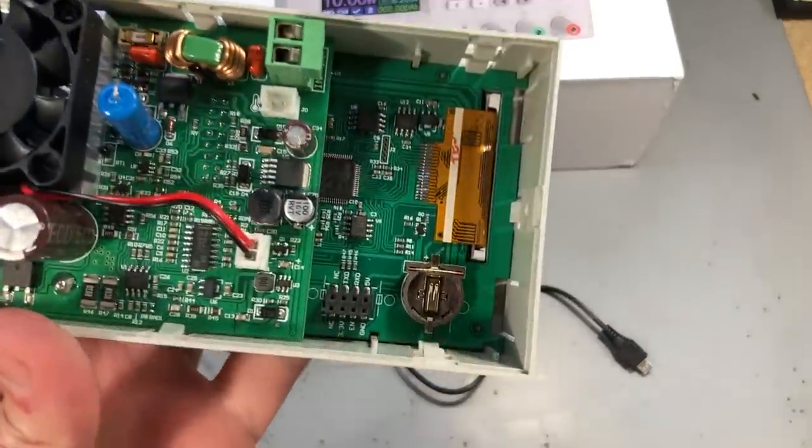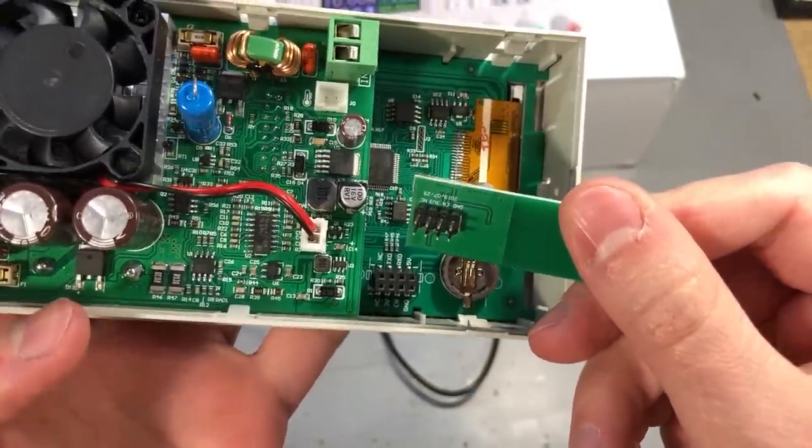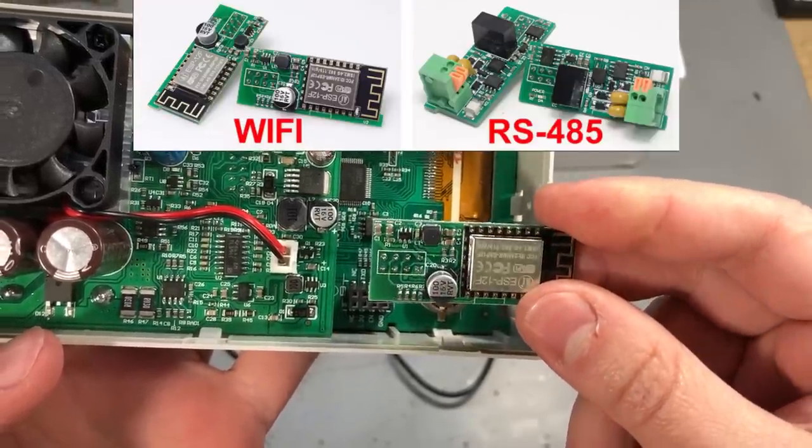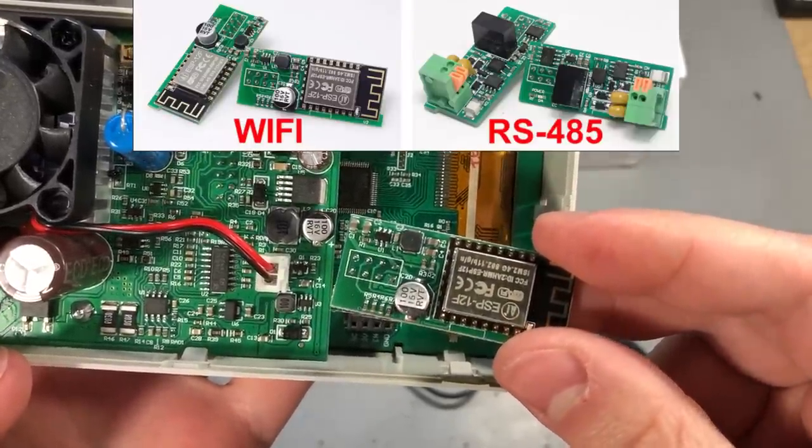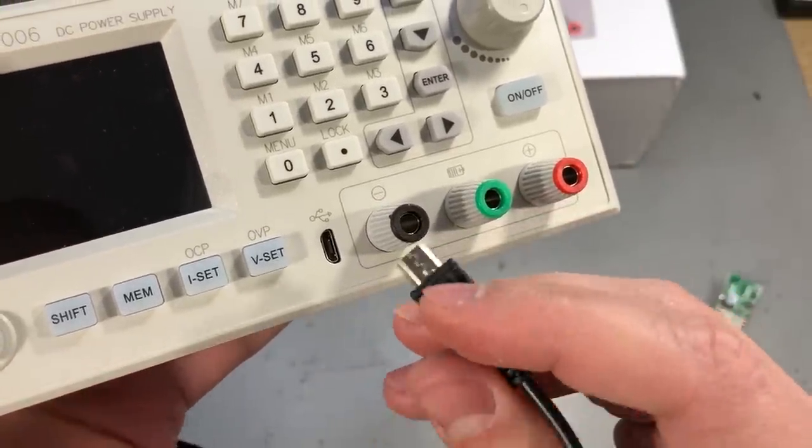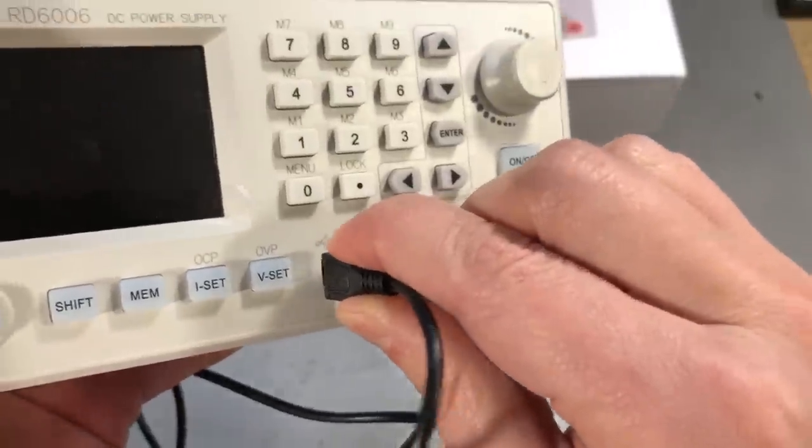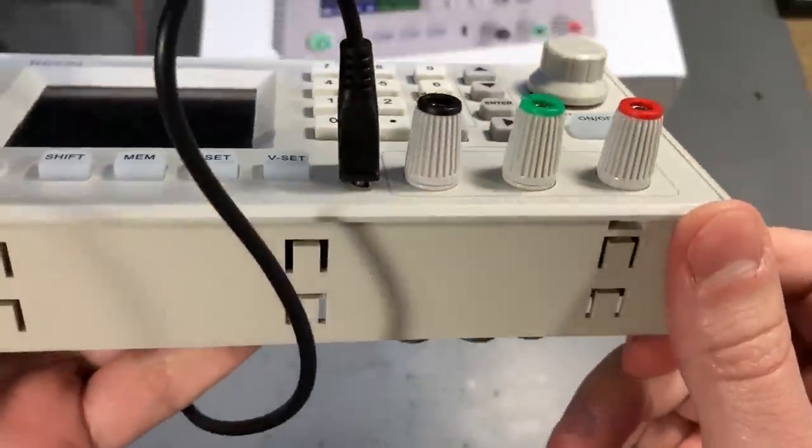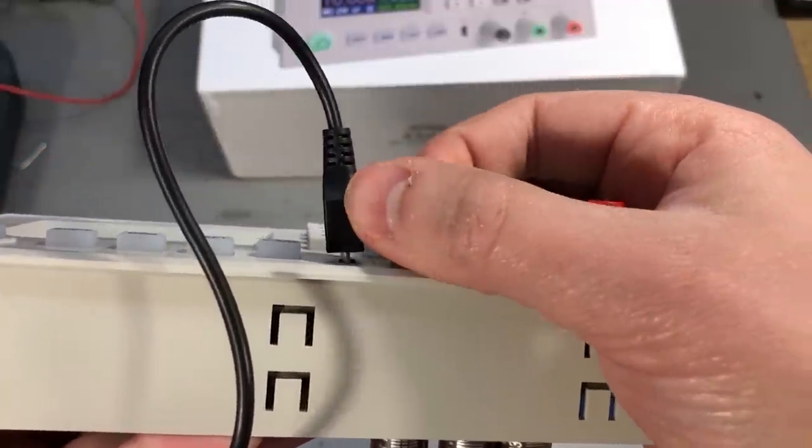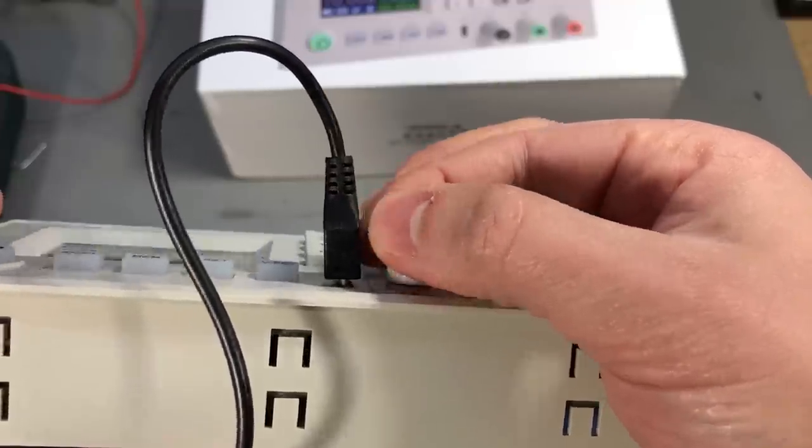And the thermistor I showed earlier is probably used for battery temperature monitoring while using the battery charging function of the power supply. In terms of connectivity, you have USB or optional WiFi or RS485 with additional modules. There is only one port for these modules so you can either have a WiFi module or an RS485 module installed. They are using a micro USB connector for PC connectivity and this is likely not an isolated interface.